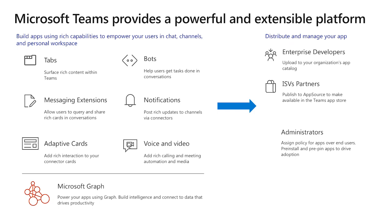For all these features, once you've built an application, you have a couple of ways to distribute them. If you're targeting an enterprise or you're an LOB developer, you can distribute your application to your organization's app catalog. If you're an ISV partner, you can publish your application to AppSource, making it available worldwide to all Teams users. Administrators can assign policies over applications and decide which users have access, and they can also pre-pin applications to drive adoption.